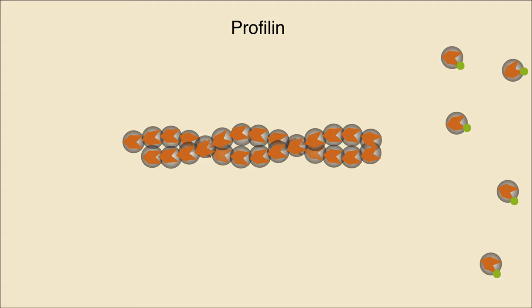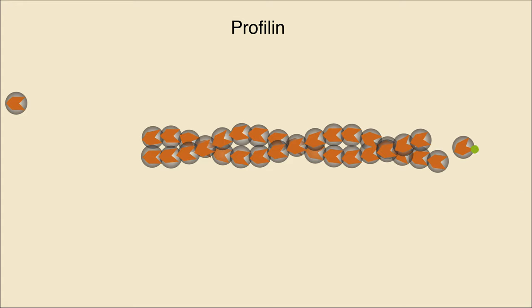Another protein, called profilin, causes actin lengthening by binding G-actin to promote addition at the plus end. This increases the rate of addition while the rate of disassembly stays the same, causing the filament to lengthen.